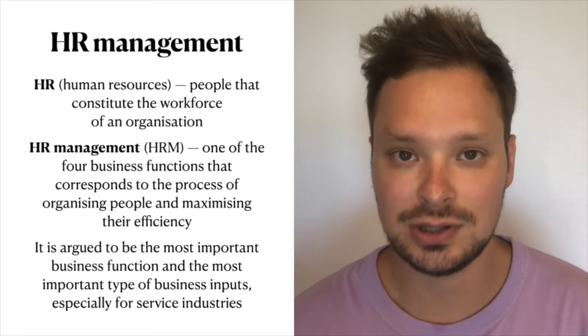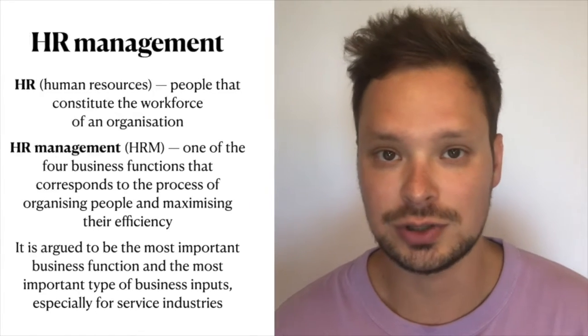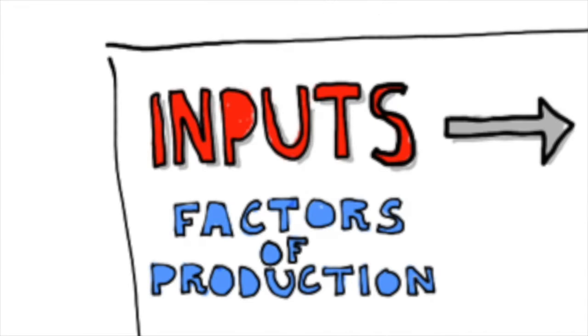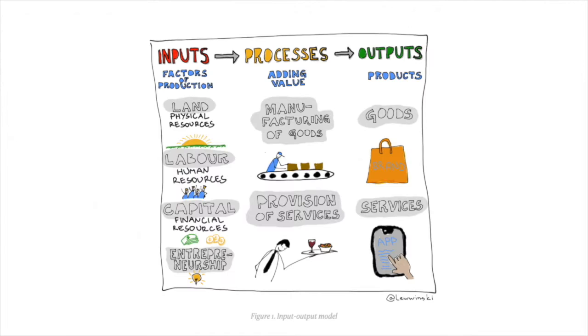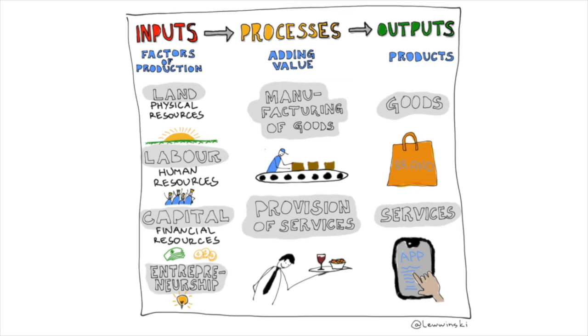This business function is particularly important to service industries from the tertiary and quaternary sectors. If you forgot what sectors of industry are, please review Unit 1 of the business management course. There are four kinds of business inputs or factors of production, and it is believed that labor or human resources is the most important one — though you can agree or disagree with that. What's important is that you can justify your opinion.